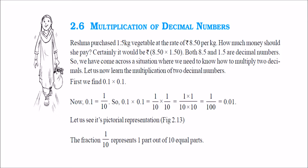Now, multiplication of decimal numbers. When you multiply decimal numbers, there are certain ways. First, let us take an example. Reshma purchased 1.5 kg vegetable at a rate of 8.50 per kg. So, what you have to do is 8.5 into 1.5. There are two methods. First method is you can directly multiply and then find out how many decimal points there are, or how many numbers are after decimal points.